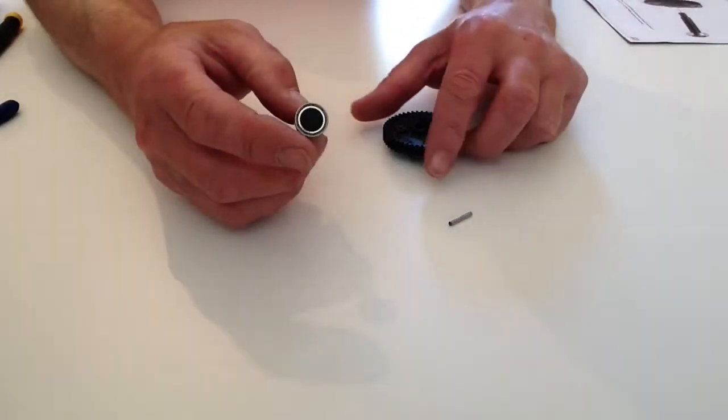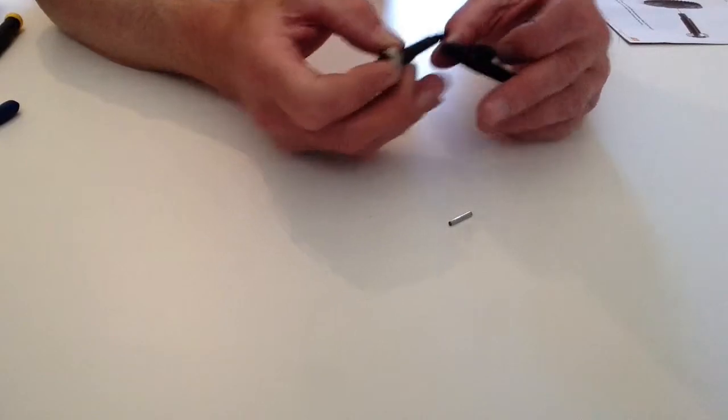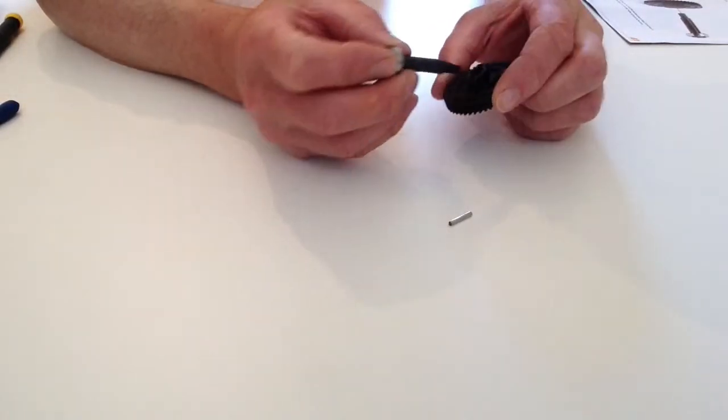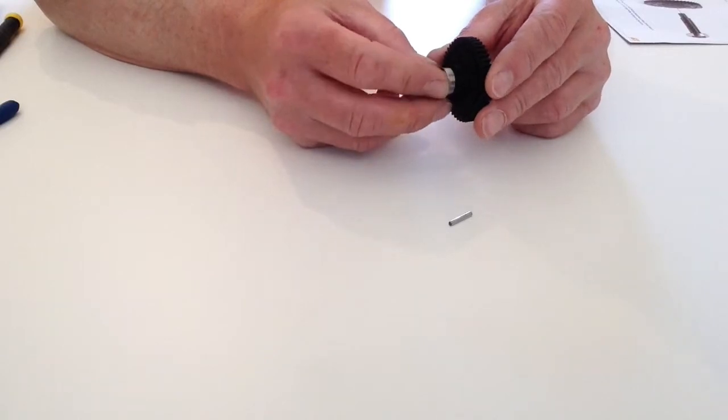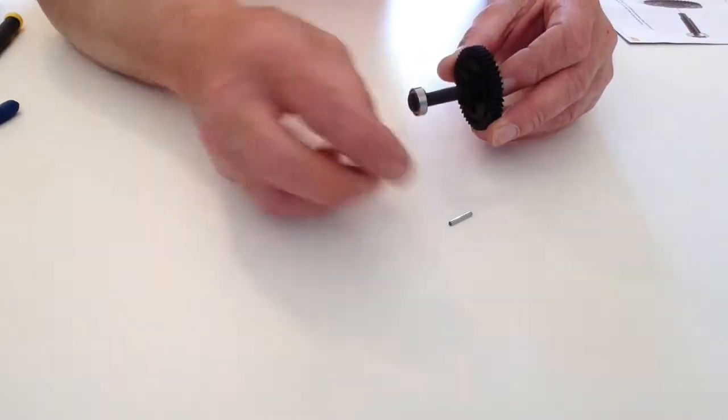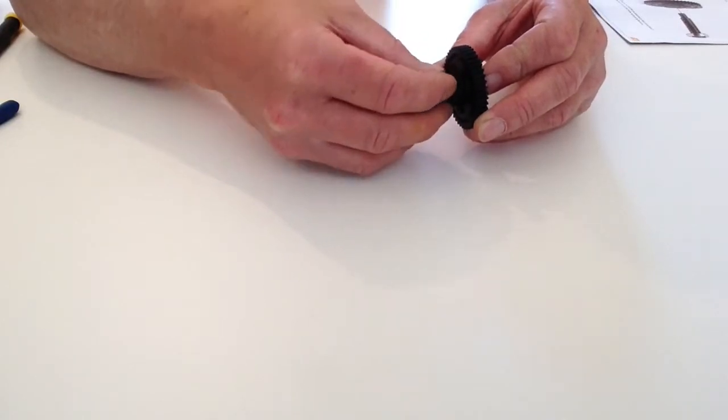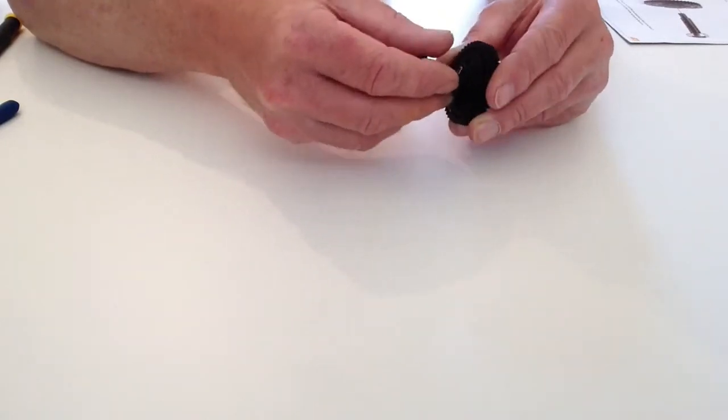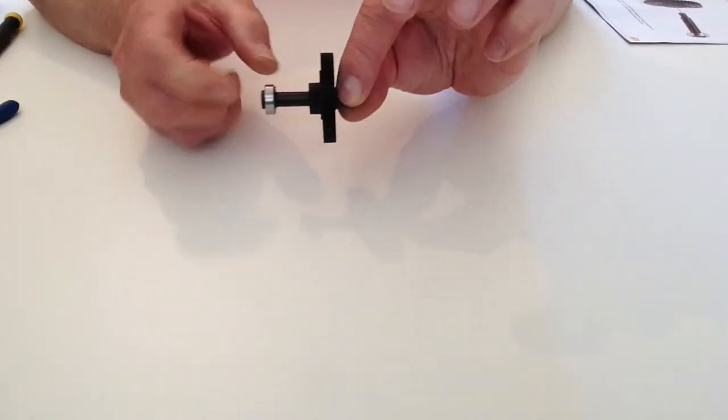Once you've done that, take your shaft with the bearing from the previous stage. We're just going to pass that through like so. Take your pin, drop your pin through the hole. So that's like that.